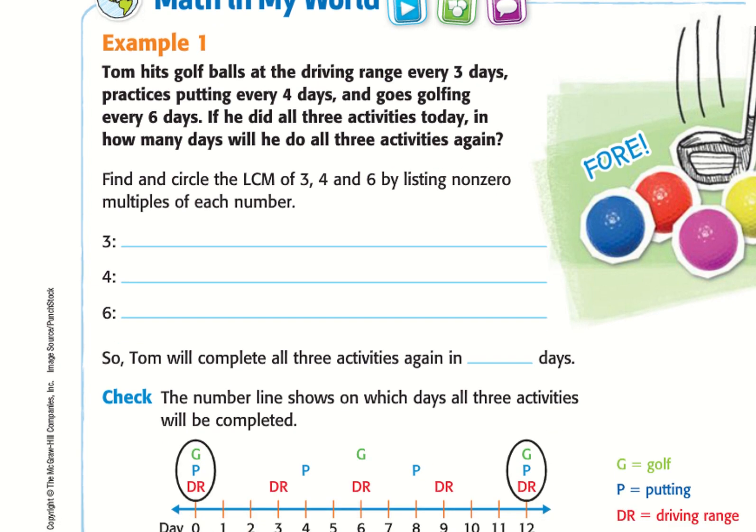So I'm going to take the multiples of three. So I have three is my first multiple, because three times one is three. Three times two is six. Three times three is nine. Three times four is twelve. And three times five is fifteen.